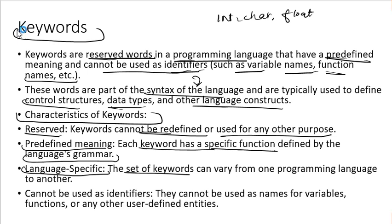Every language has a specific set of keywords, so these are language-specific. Keywords can differ between languages like C++, Java, etc. Next, keywords cannot be used as identifiers — you cannot use them as variable names, function names, or any user-defined entity. For example, you can't give a variable the name of a keyword. These are some important characteristics of keywords.